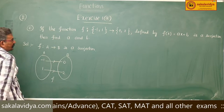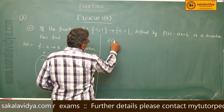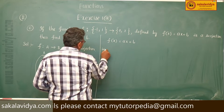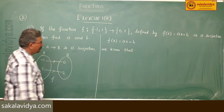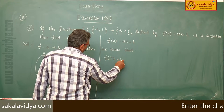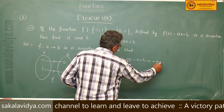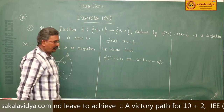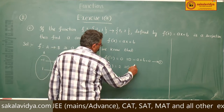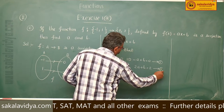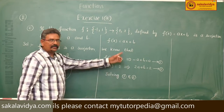The function formula is given by f of x equal to ax plus b. The image of negative 1 is 0, so f of negative 1 equals 0, giving minus a plus b equals 0 — equation 1. The image of 1 is 2, so f of 1 equals 2, giving a plus b equals 2 — equation 2. Solving equations 1 and 2, we get the values of a and b.